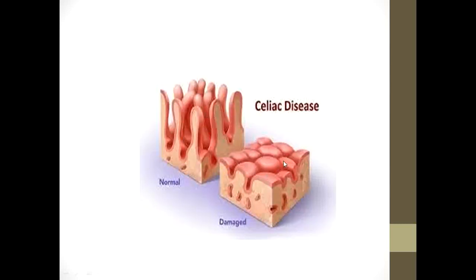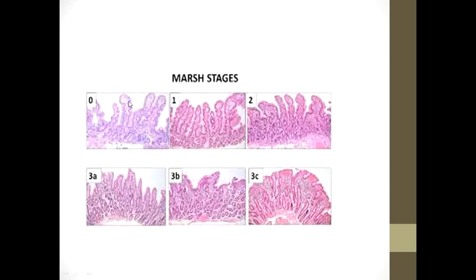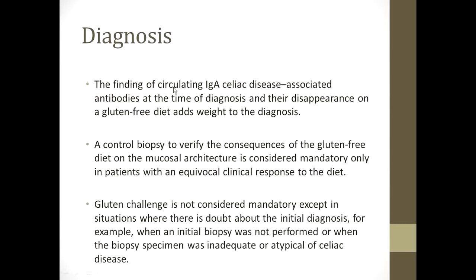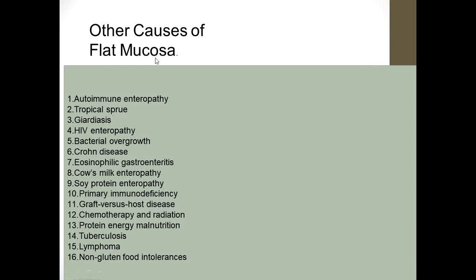You can see the villi in the histological image — the villi are flattened or atrophied. Marsh stages are the histological staging of the disease: 0, 1, 2, 3a, 3b, and 3c — the extreme being total villous atrophy. The binding of circulating IgA celiac disease-associated antibodies at the time of diagnosis and their disappearance on a gluten-free diet adds weight to the diagnosis.